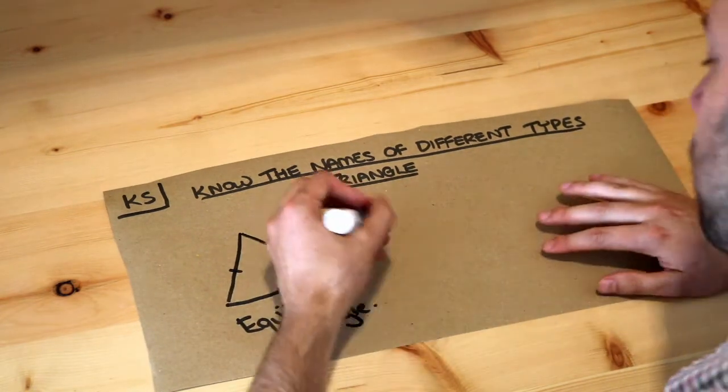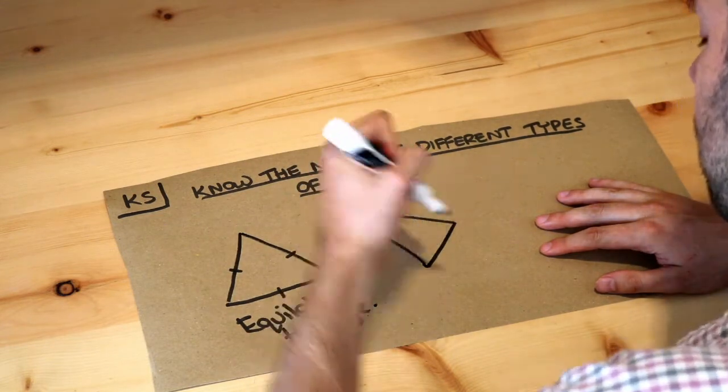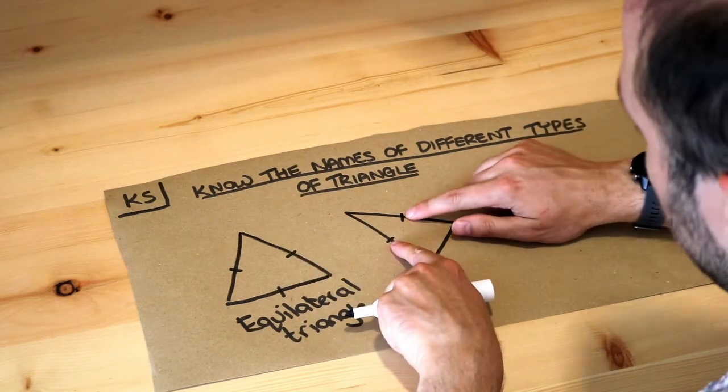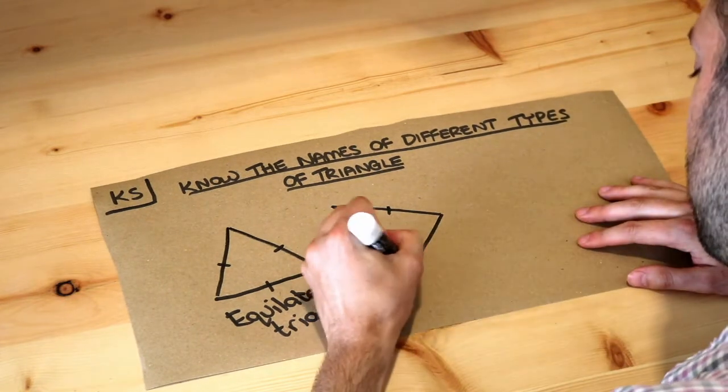Now another type of triangle: if two of the sides are the same length, so let's put a little mark here and a little mark here to indicate that these two sides are the same length, then this is known as an isosceles triangle.